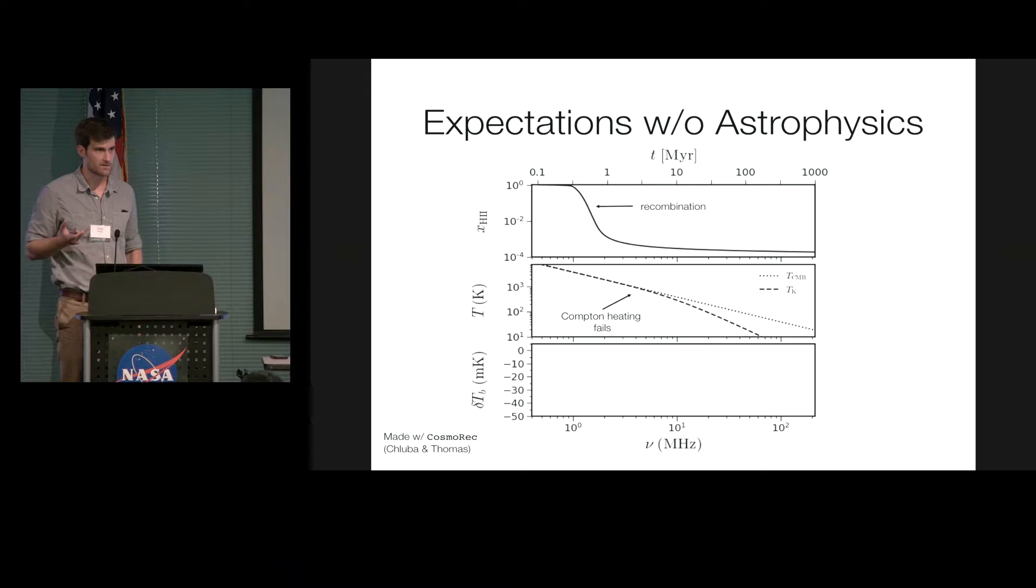So it's useful to think about a simplified example in which there is no astrophysics. We just consider a big block of the universe. It has some density, and it's just expanding with time and cooling. And so I'm going to show you how a few quantities play out in this slide. The top panel is the ionization history, which you've probably seen before. So cosmological recombination occurs a few hundred thousand years after the Big Bang, and the medium goes from being ionized to quite neutral. At the same time, the CMB background radiation field is cooling.